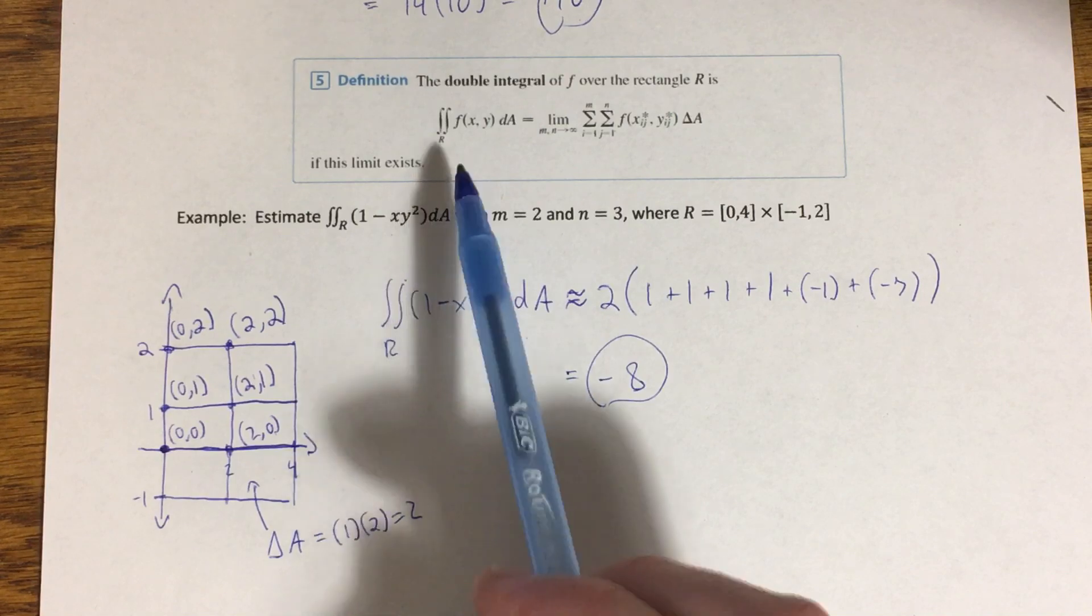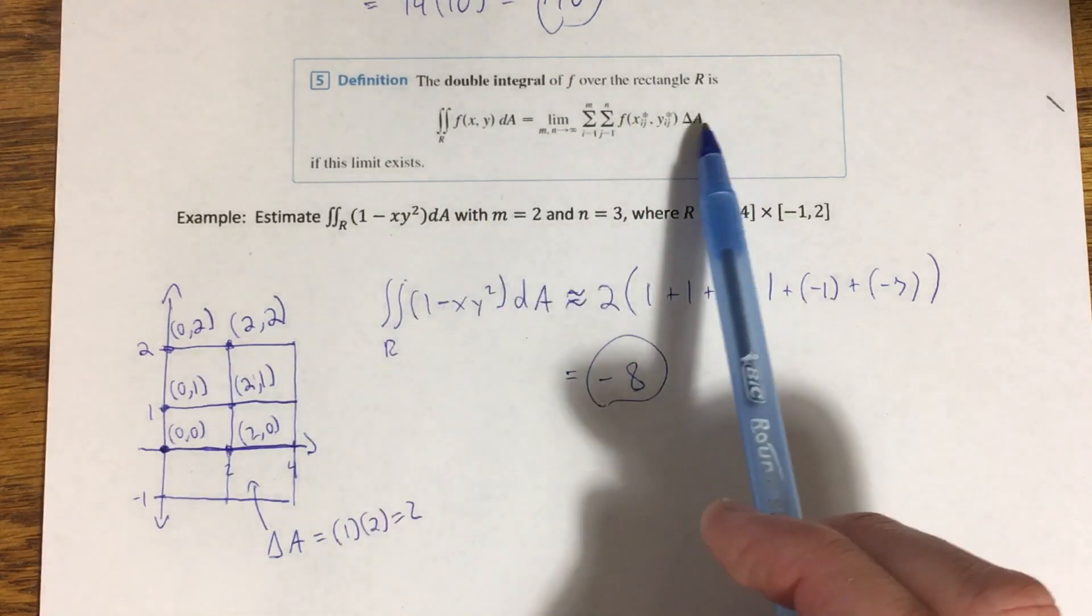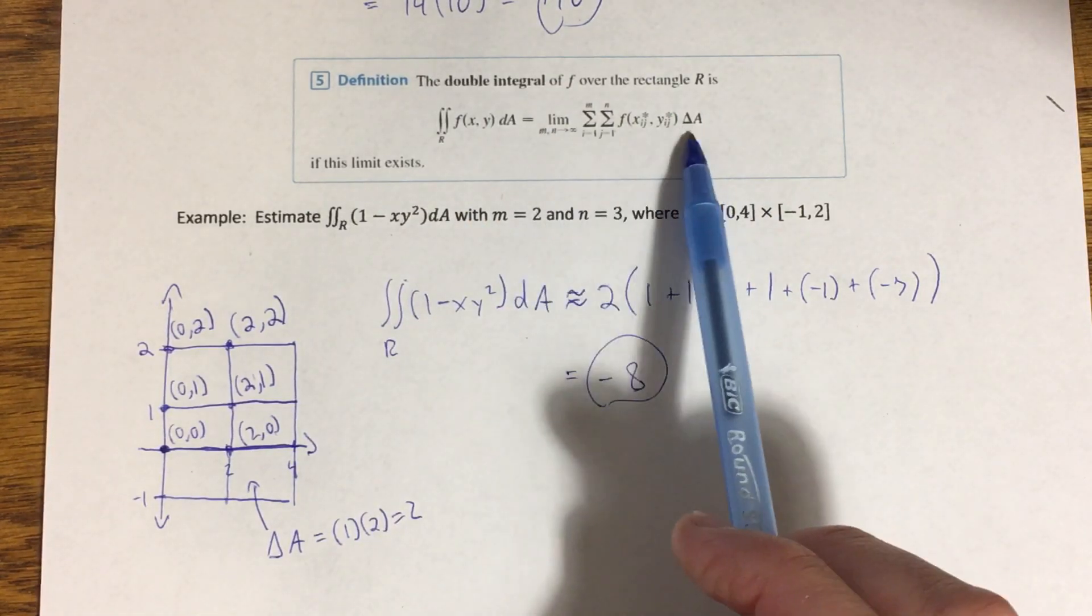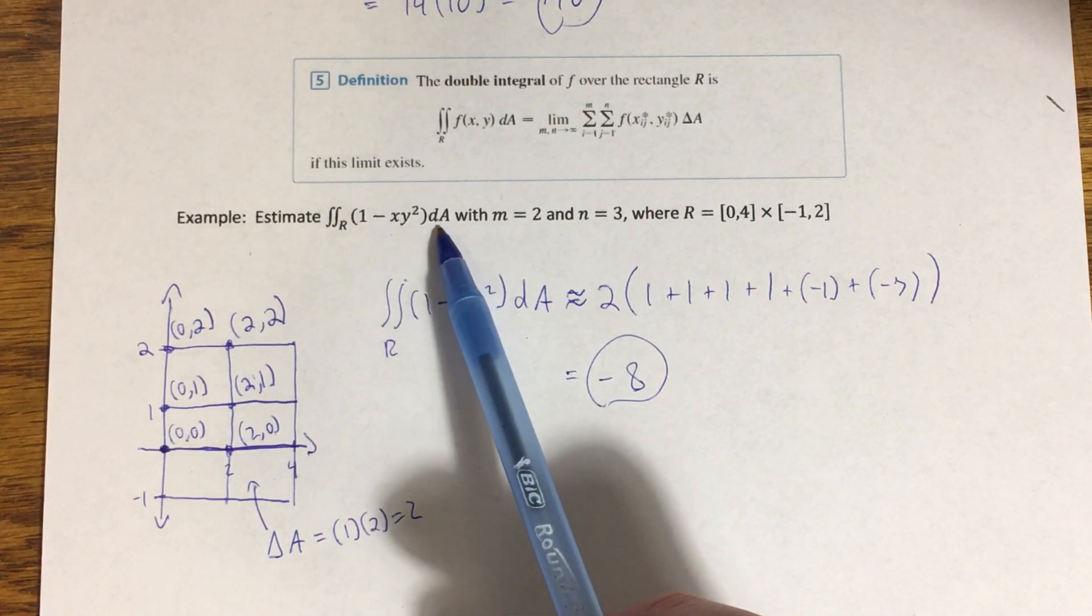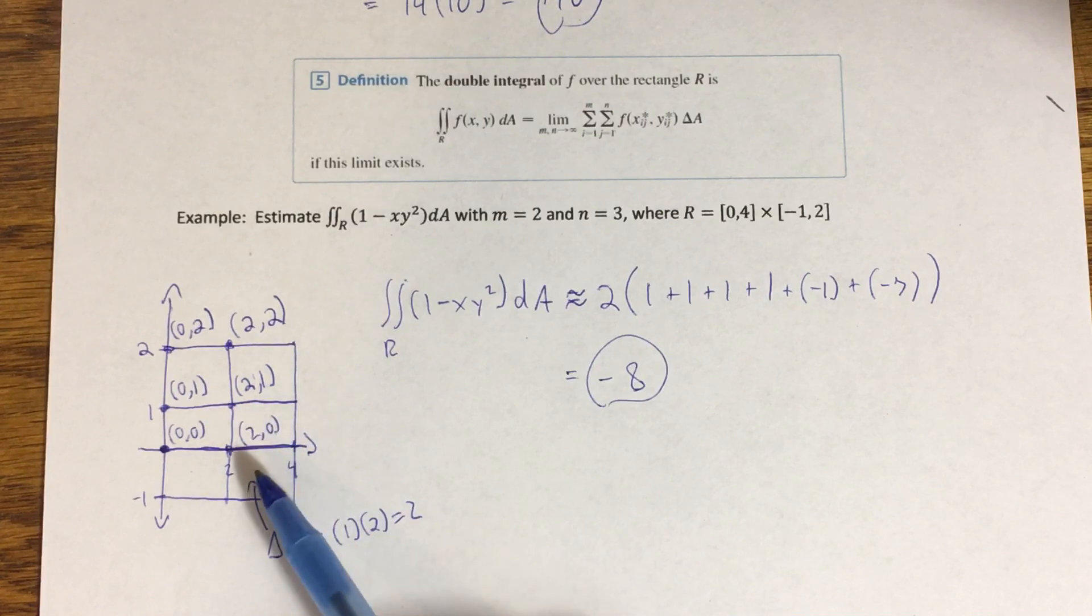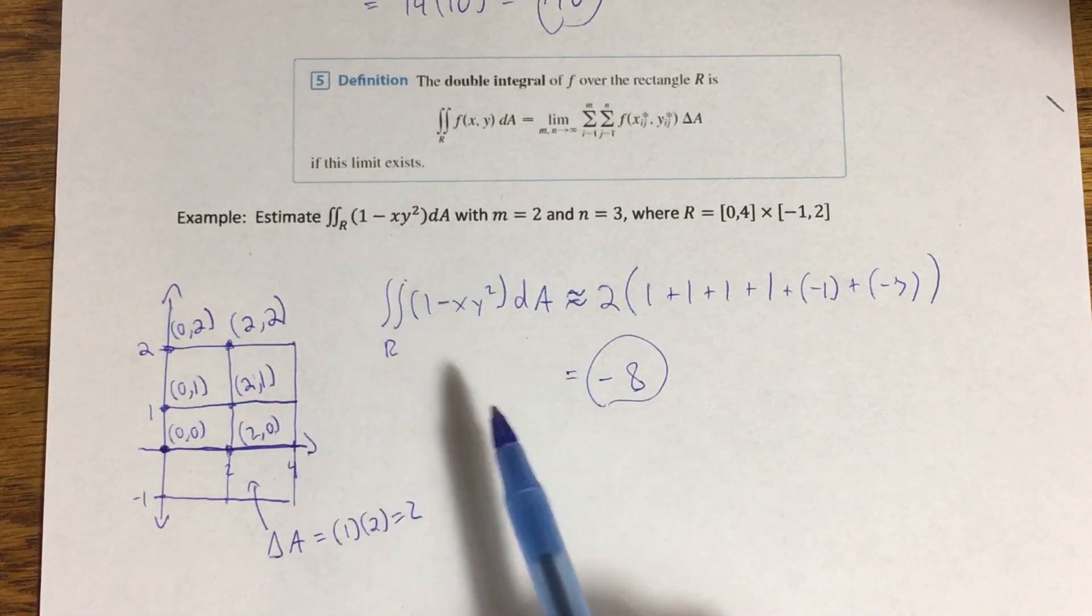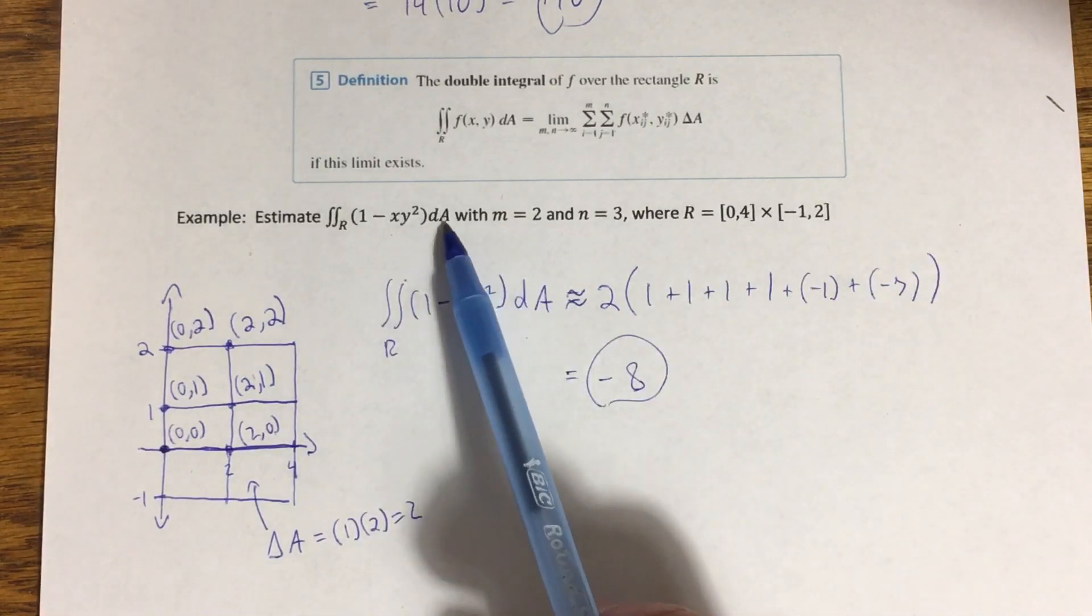So here I want to estimate this double integral. The double integral of R, or double integral over R of the function 1 minus xy squared dA. The dA here is what happens to the delta A when we apply that limit.